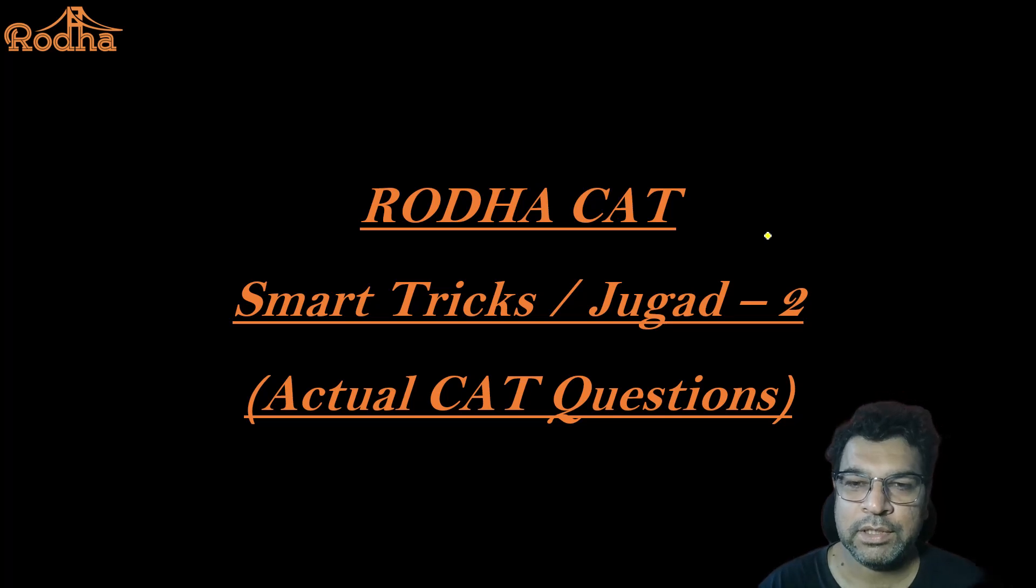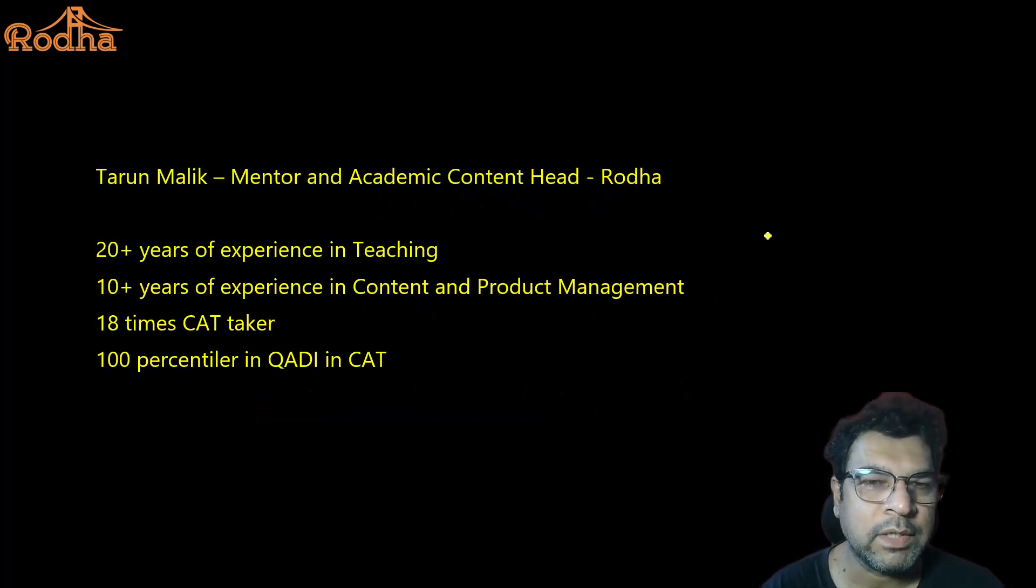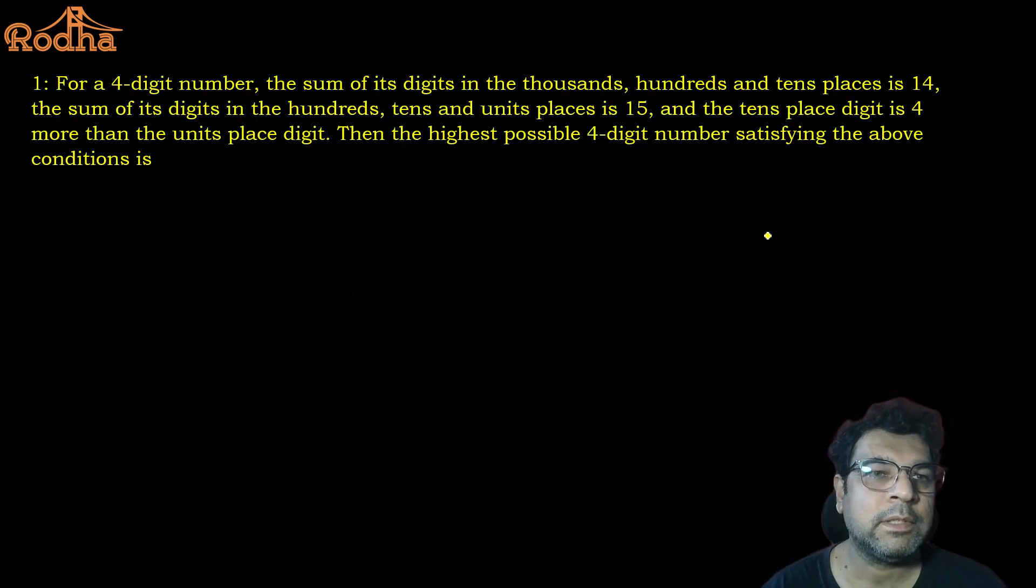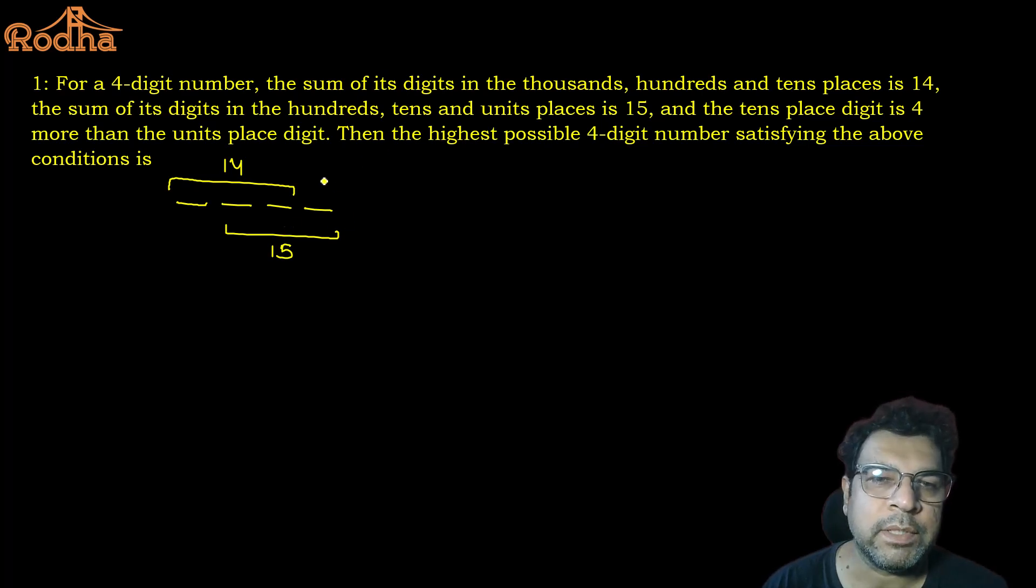Let's start with the first question. For a four-digit number, the sum of its digits in the thousands, hundreds, and tens place is 14. The sum of its digits in the hundreds, tens, and units place is 15, and the tens place digit is 4 more than the units place digit. Then the highest possible four-digit number satisfying the above conditions is... Sum of thousands, hundreds, and tens is 14. Sum of hundreds, tens, and units is 15, and tens place is 4 more than units place.